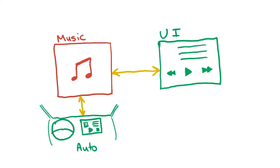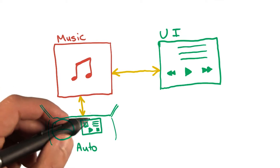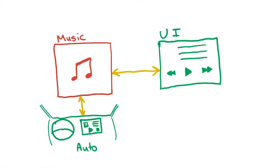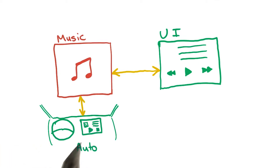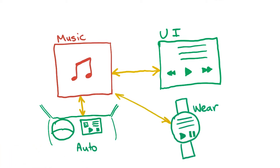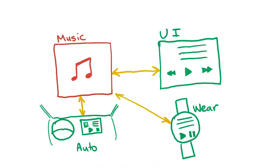An interesting side effect of this design is that your app can export the media to other apps running on the device. So the Android Auto app can query the available music from your app and show it using a user interface appropriate for the car. Android Wear is also able to do the same, and show a user interface appropriate for the wearable device.